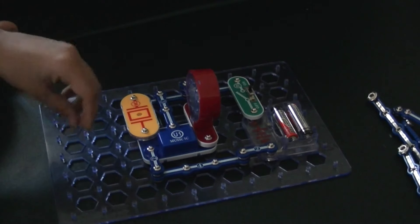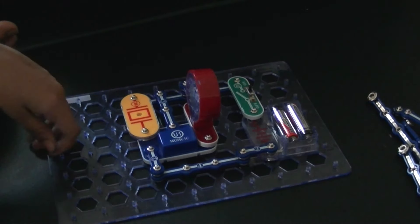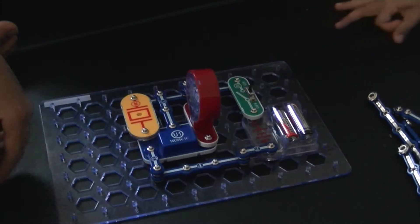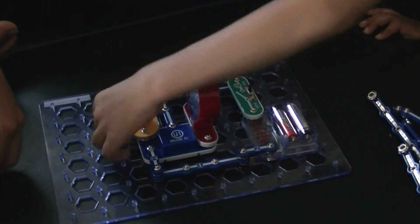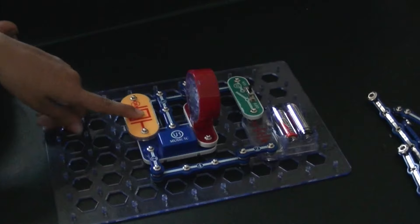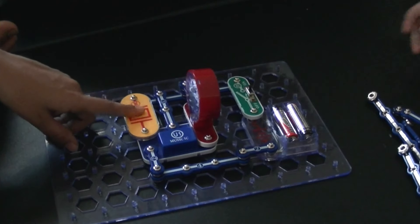This is actually experiment number three in the book for the 750 experiments. We're going to do a whole bunch of different ones from there. Now we're going to adjust the sound levels by putting a resistor, a 100-ohm resistor.